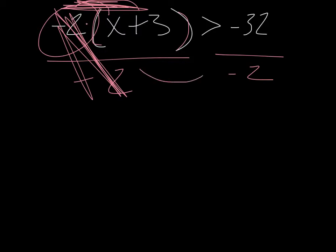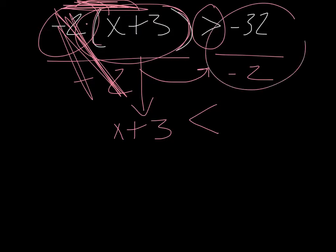Now, any time you divide or multiply a negative across a sign, the sign flips. Therefore, now this goes this way. And everything else comes down just the same as it was. So we've got x plus 3 on this side, and then we do negative 32 divided by negative 2, which is positive 16.